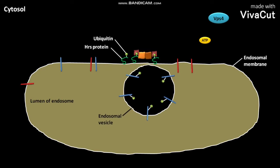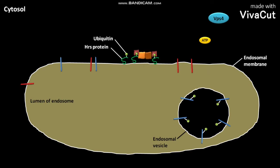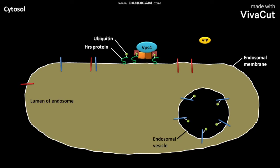The bound or assembled ESCRT mediates the membrane fusion and pinching off of the completed endosomal vesicle. The cytosolic ATPase called VPS4 then binds to the bound ESCRT. The cytosolic ATP then binds to VPS4, which converts the bound ATP to ADP and Pi, which are then released to the cytosol.